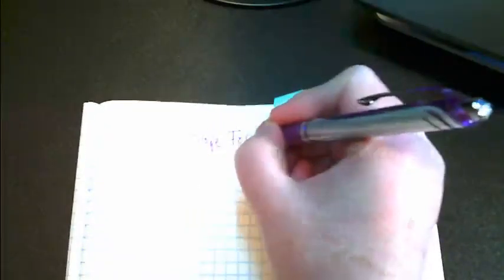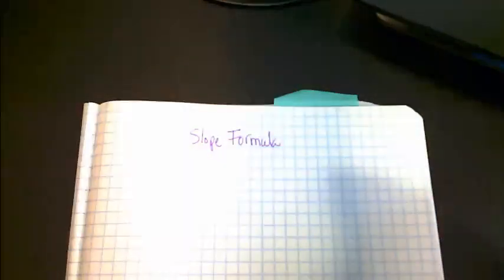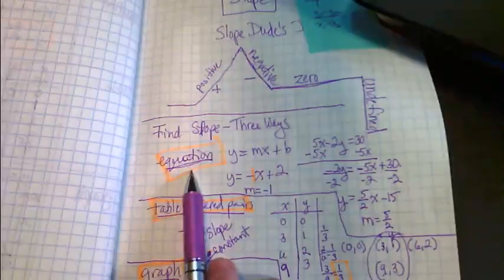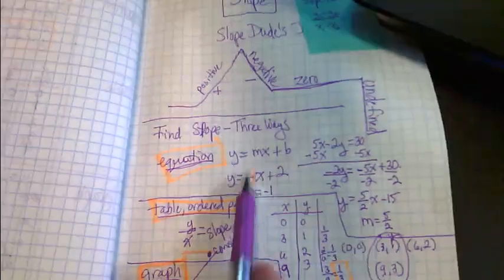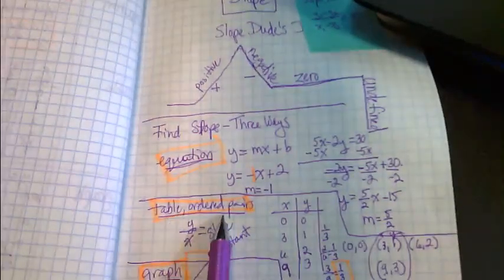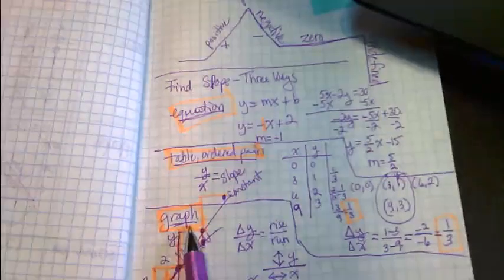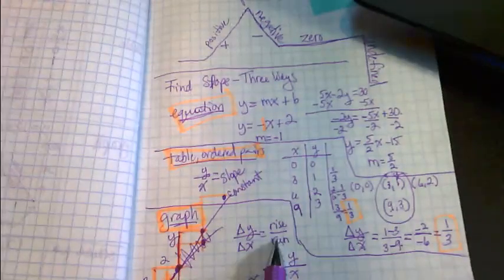We have done some work on what the equation is, y equals mx plus b, and we talked last time about three ways to find slope: you could use the equation where the slope would be in the m place, you could use ordered pairs or a table, and that's what our focus is going to be today and tomorrow.